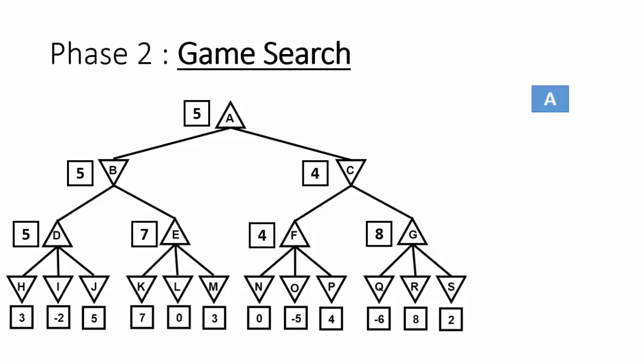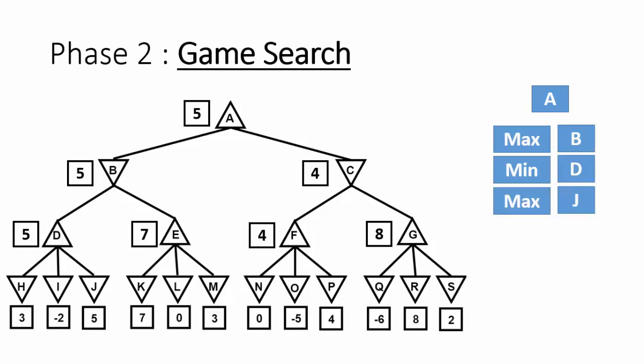Starting with root node A — a Max player — it selects the maximum score of its children, which is node B. Node B is a Min player, so it selects the minimum score of its children, which is node D. Node D is a Max player and selects the maximum score of its children, which is a score of 5 for node J. The final path from the root node to the goal node is A → B → D → J.